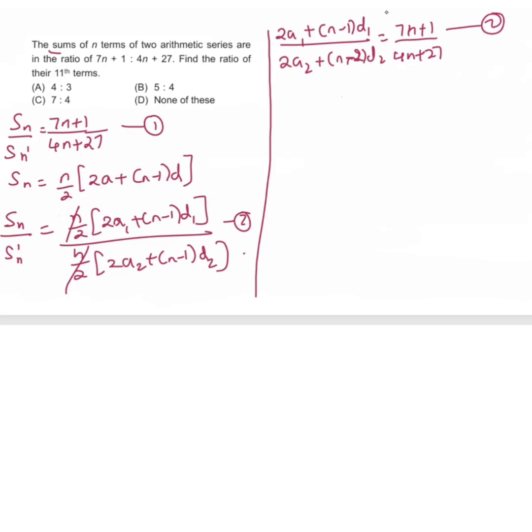Now we know the ratio of 11th term. We can write them as a1 plus 10d1 divided by a2 plus 10d2. We will multiply by 2 to get 2a1 plus 20 into d1 divided by 2a2 plus 20 into d2.